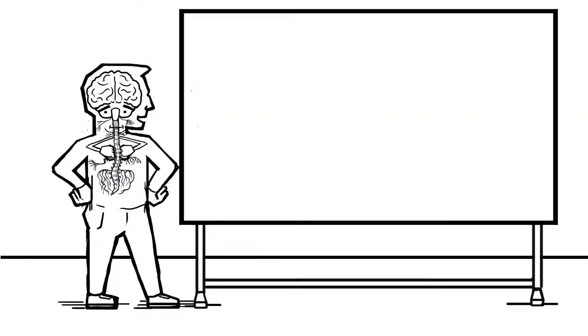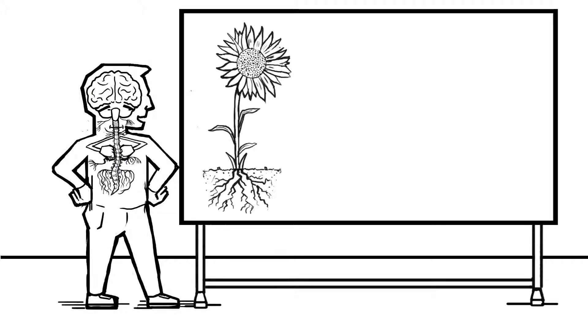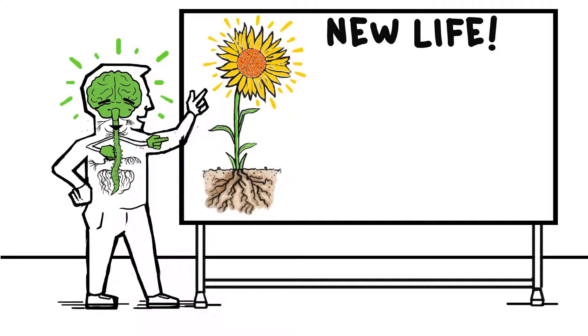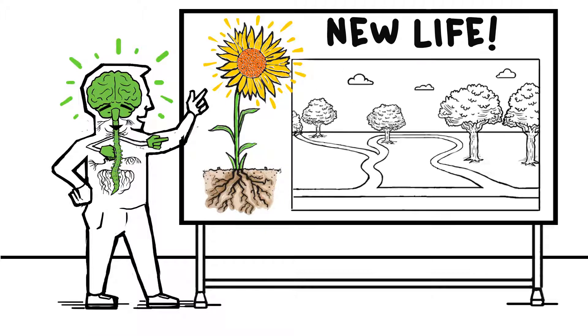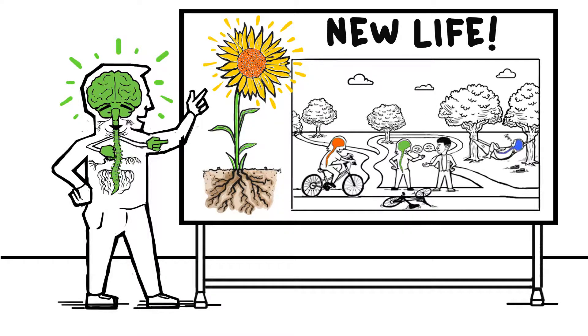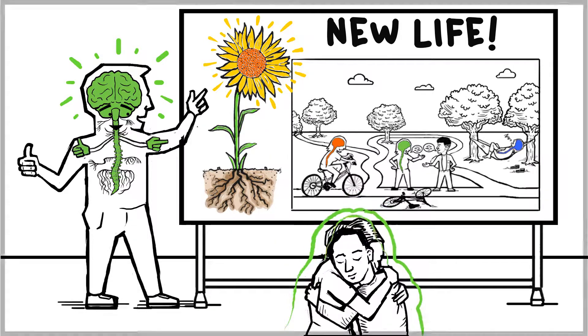For those living with the impacts of trauma and chronic stress, becoming unstuck is like beginning a new life. For the rest of us, understanding how our nervous system states guide our behavior can help us become happier, healthier, and more empathetic human beings.